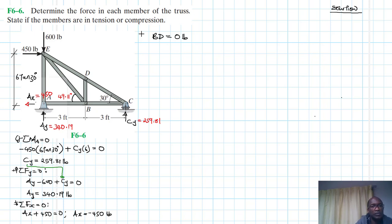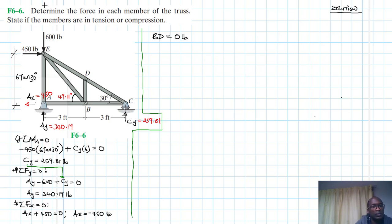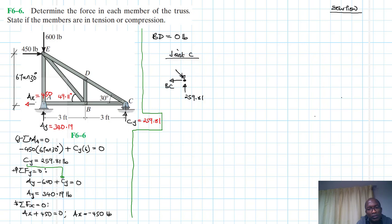Let's start with joint C. We create a boundary there. At joint C we have the reaction force of 259.81 pounds. Let's assume BC is in tension and CD is in compression. We have a 30-degree angle, giving components: CD sin 30° (vertical) and CD cos 30° (horizontal).